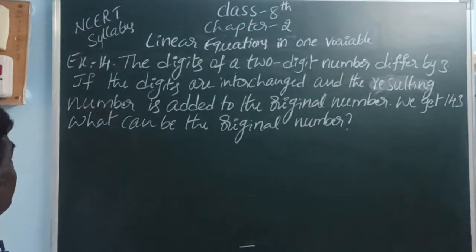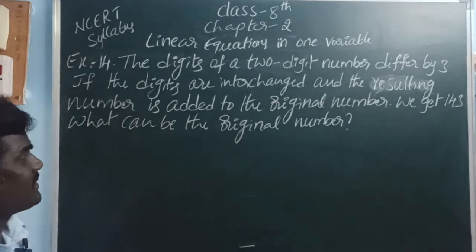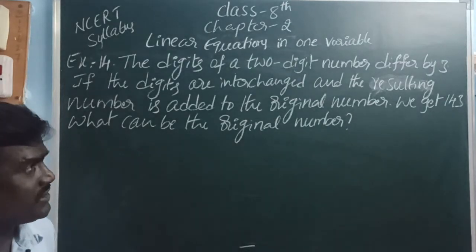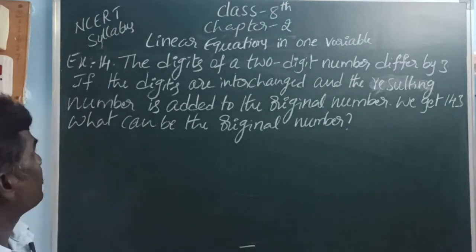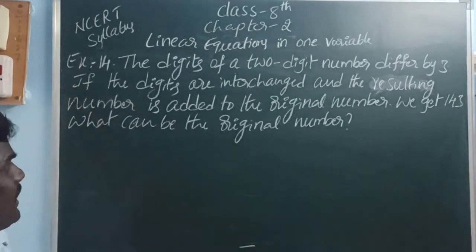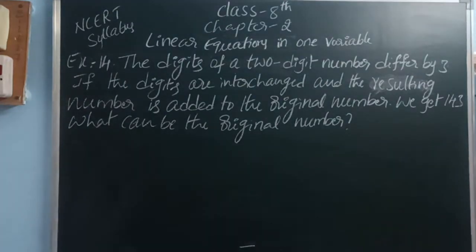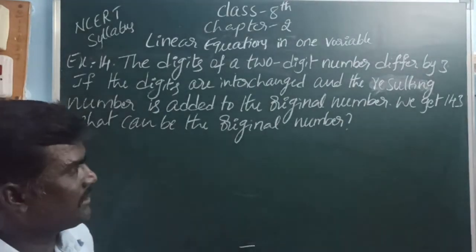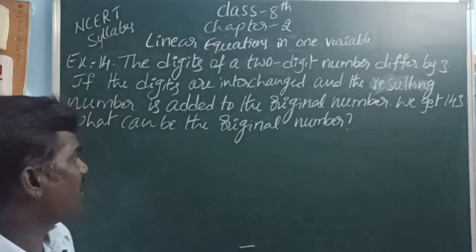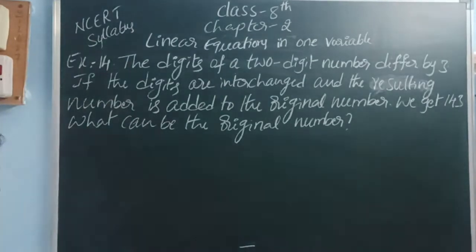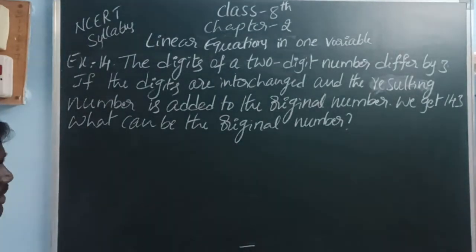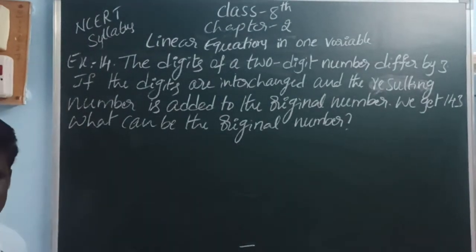Here, Example 14: The digits of a two-digit number differ by 3. If the digits are interchanged and the resulting number is added to the original number, we get 143. What can be the original number?